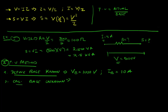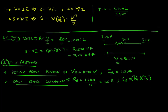Step two: calculate the bases for the unknown quantities. I don't know resistance and power, so: resistance base = voltage base / current base = 1000/10 = 100 ohms. And power base = voltage base × current base = 1000 × 10 = 10,000 volt-amps, or 10 kVA.